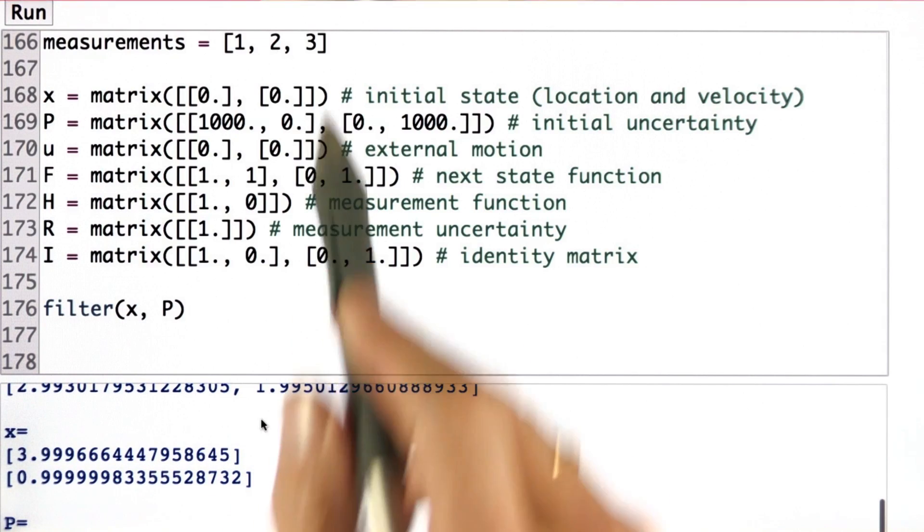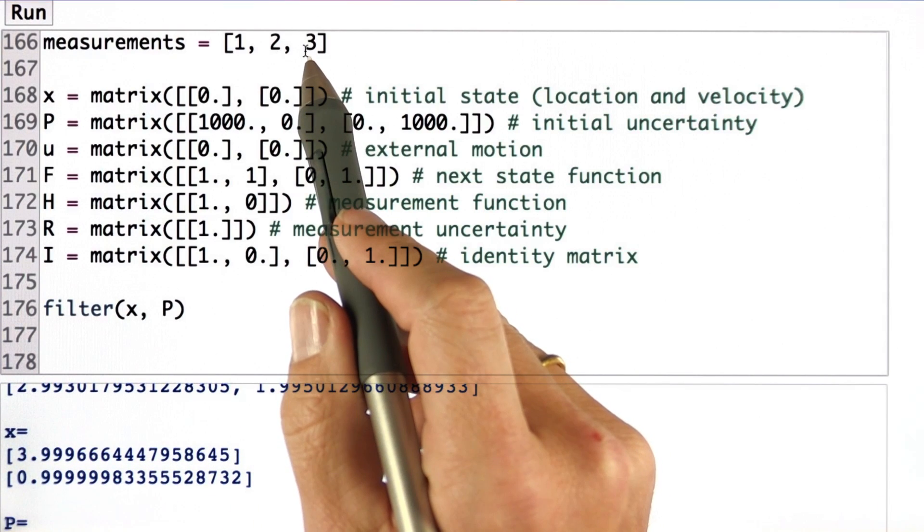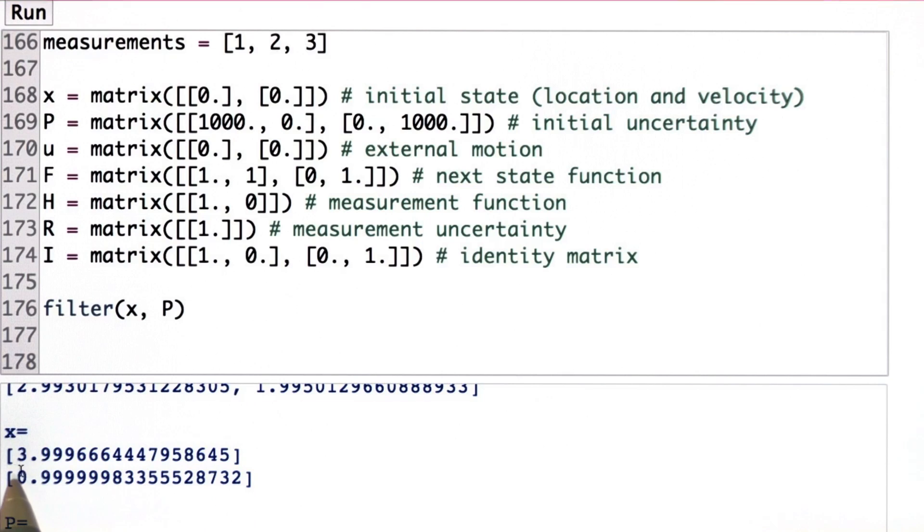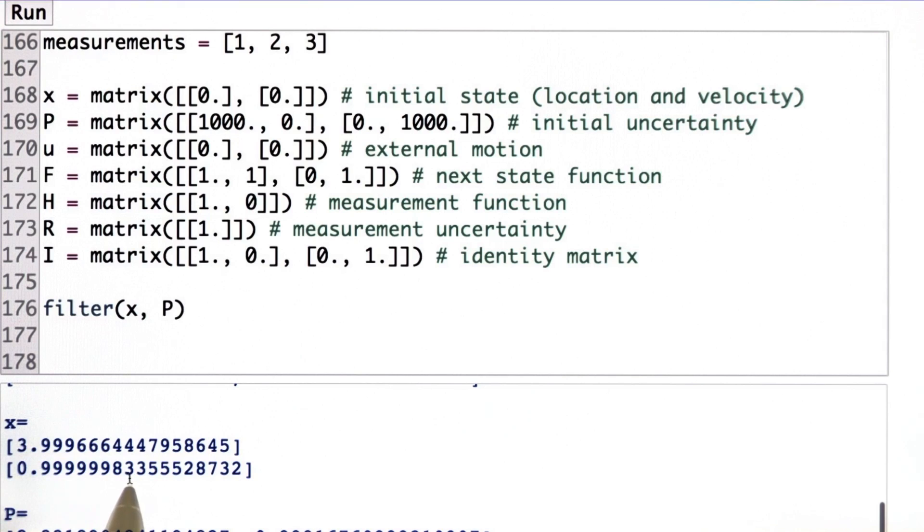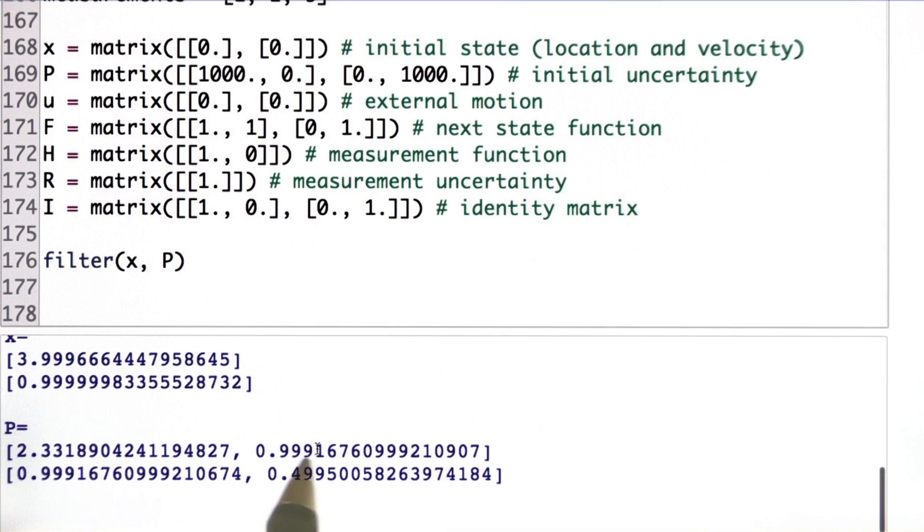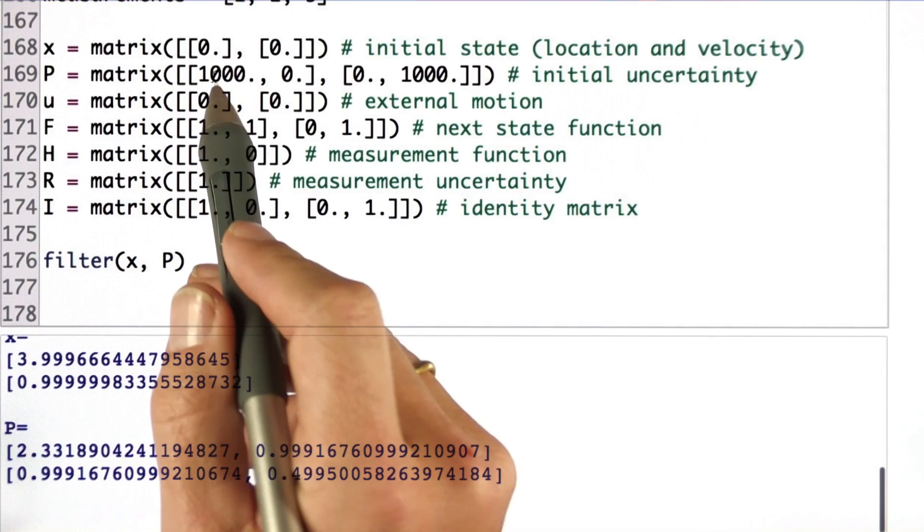There's a new covariance matrix. And for the third observation followed by the prediction, the prediction is correctly, effectively 4, 3.999. The velocity estimate is correctly 1, which is 0.99999, and I have yet another uncertainty matrix, which illustrates I have high certainty in the velocity estimate, and also relatively high certainty in the position estimate compared to my initial uncertainties.